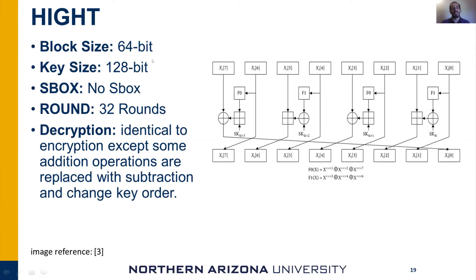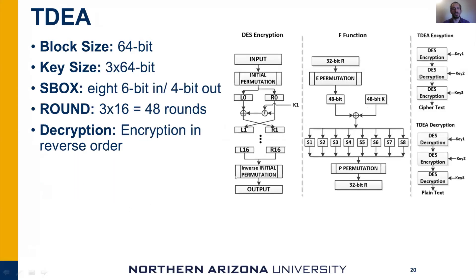HIGHT is a 64-bit block cipher with a 128-bit key. It doesn't use any S-boxes and has 32 rounds. The decryption algorithm is identical to encryption, but some addition operations are replaced with subtraction operations, and we change the key order in the decryption algorithm.